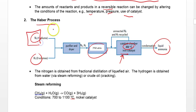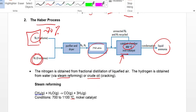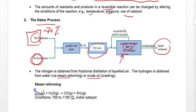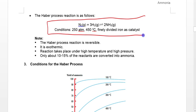N2 is obtained from fractional distillation of liquefied air, since air contains about 70% nitrogen. Hydrogen is obtained by steam reforming or the cracking of crude oil. The steam reforming reaction is straightforward: methane reacted with water (steam) gives carbon monoxide and hydrogen, at high temperature with a nickel catalyst.